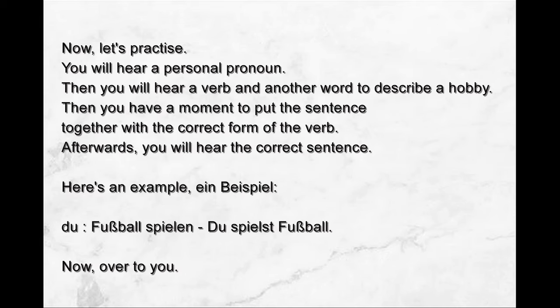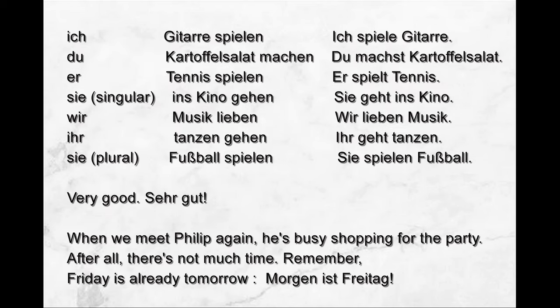Now let's practice. You will hear a personal pronoun, then a verb and another word to describe a hobby. You have a moment to put the sentence together with the correct form of the verb. Afterwards you will hear the correct sentence. Here is an example: Du, Fußball spielen — Du spielst Fußball. Now over to you: Ich, Gitarre spielen — Ich spiele Gitarre.